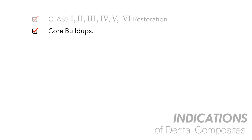Composite is the material of choice in all these cases because, unlike amalgam, it does not require aggressive preparation — you just remove caries, fill, and cure. For core buildups after root canal therapy, amalgam is not the material of choice because it wedges the tooth and can cause fracture. Composite is preferred post-RCT because it not only reinforces weakened walls but also bonds to tooth structure.